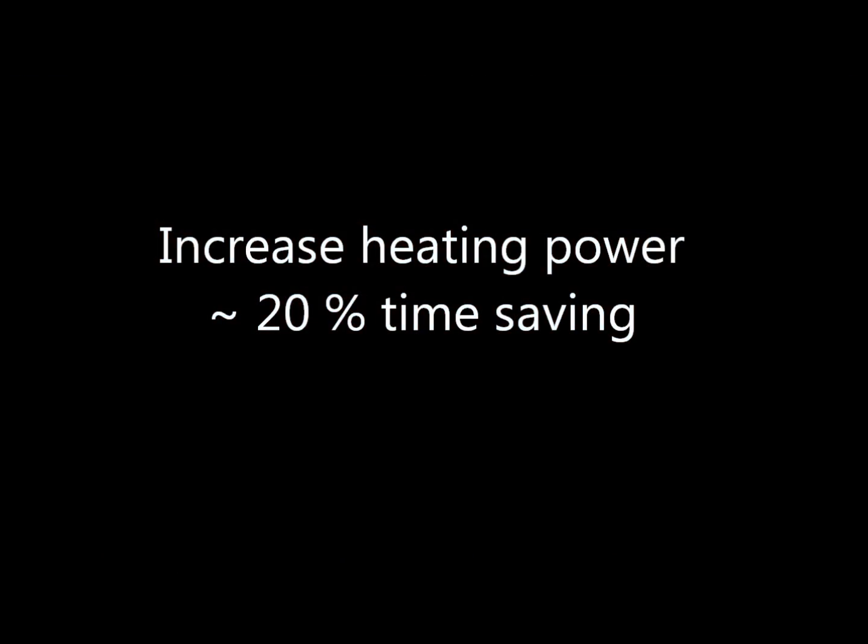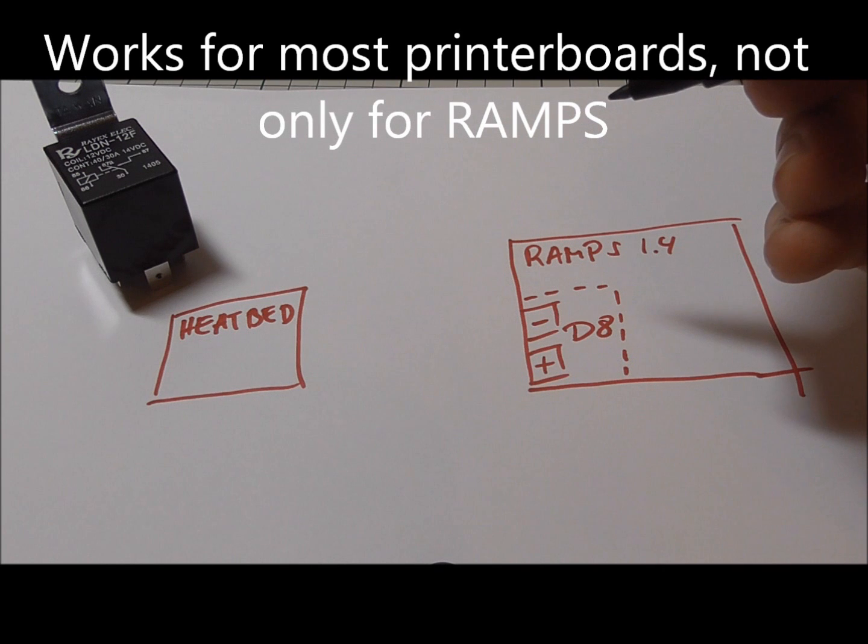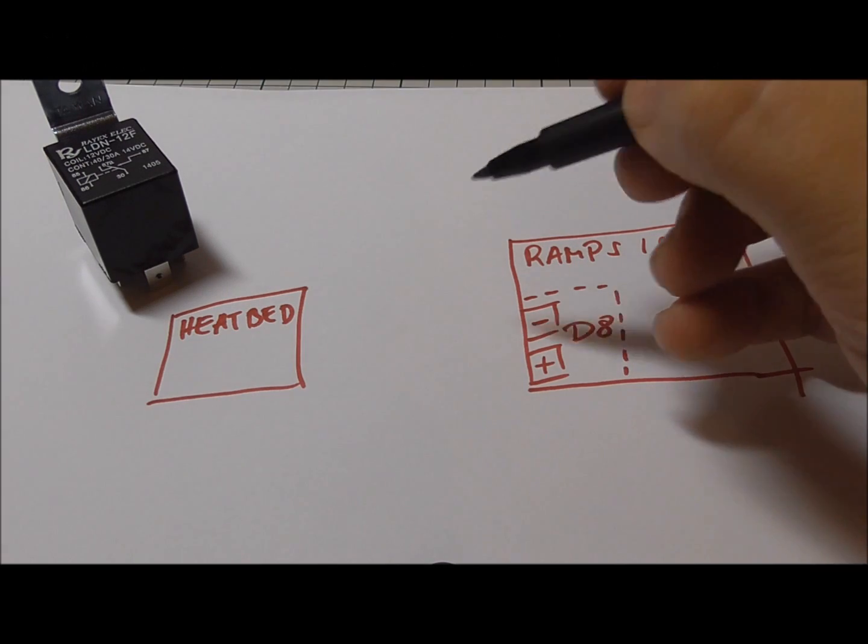The next tip is related to a modification of your electronics. Usually the heat bed is powered by the power stage of your printer board. To protect your printer board from overheating, this power is limited and thus not the best way to heat up your heat bed.